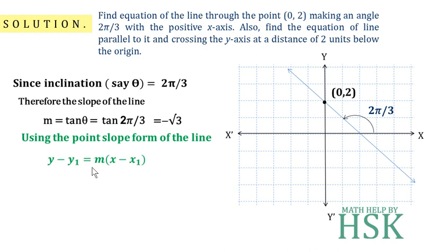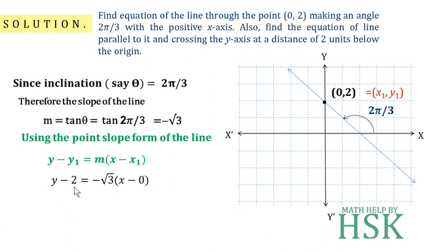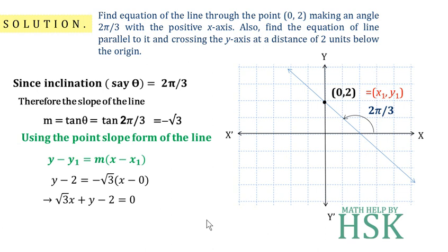Using the point-slope form of the line, y − y₁ = m(x − x₁), we take (x₁, y₁) = (0, 2) and m = −√3. We get y − 2 = −√3(x − 0), and rearranging the terms gives us √3x + y − 2 = 0. This is the equation of the line for the first part.